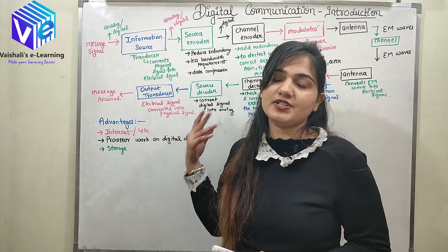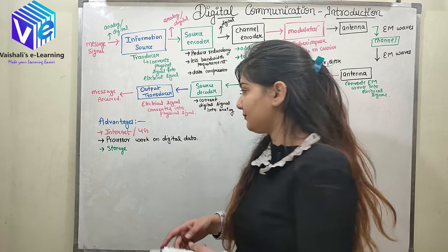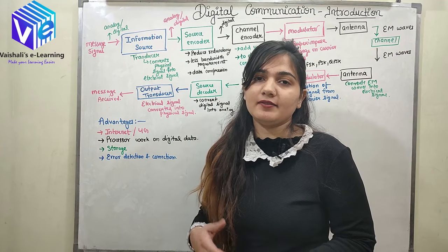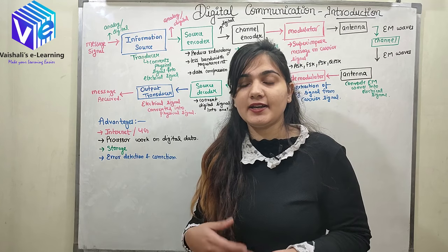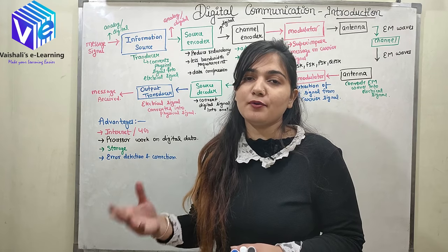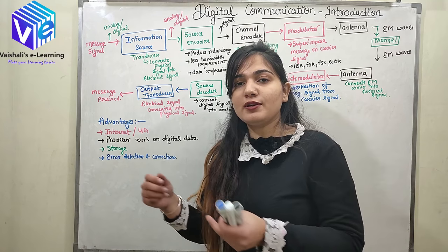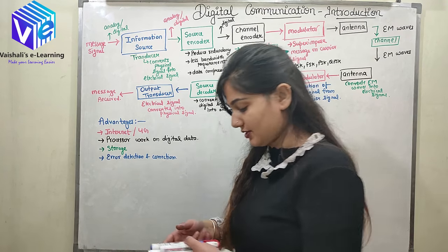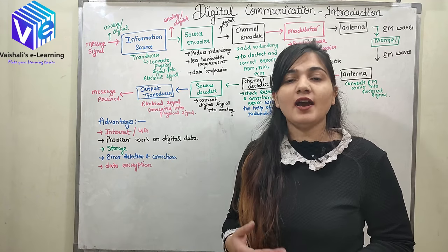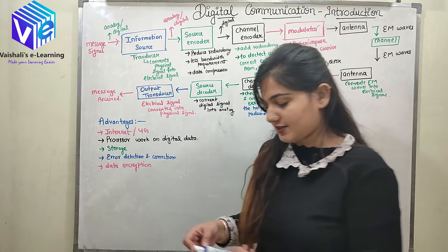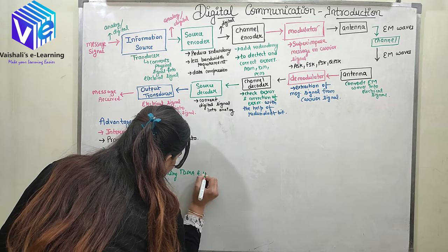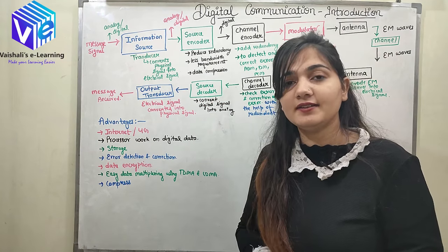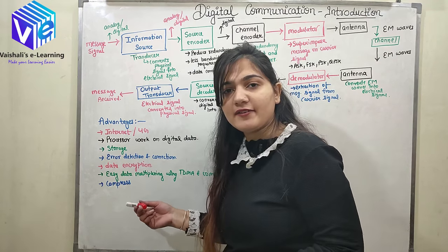In digital data we have error detection and error correction capability. We can also encrypt the data — the data can be changed and sent in an encrypted form, and only the person with the right key can access it, blocking data from unwanted users. We can also easily multiplex the data using TDMA and CDMA. Additionally, we can compress the data and send it in compressed format, which also reduces the bandwidth requirement.